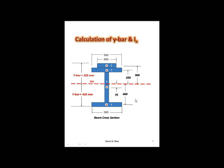Remember that the dy's are not the same. The dy for the y-bar calculation was based on the base — from the bottom of the shape. The dy's for the inertia calculation use the neutral axis as your baseline. So I need the distance from the neutral axis to each shape. To calculate this, I have the height of 425 from the base, and I can calculate the little distances from there.